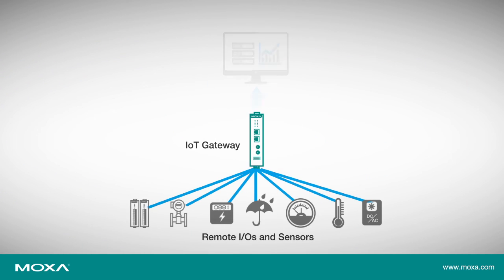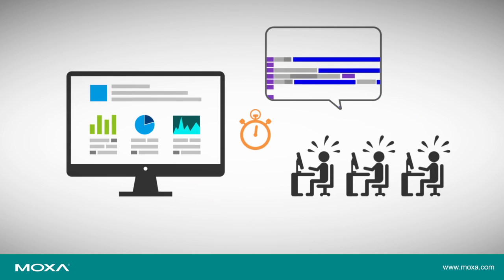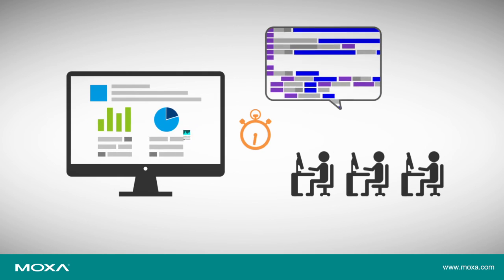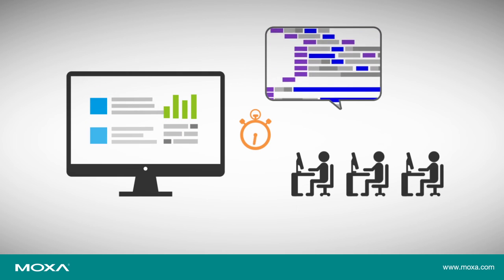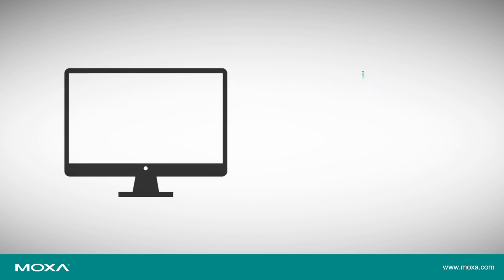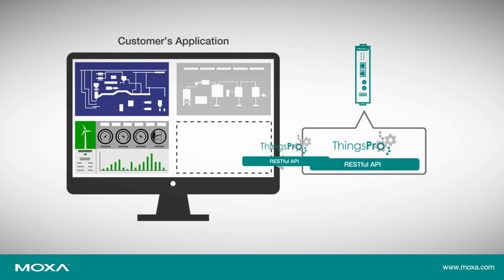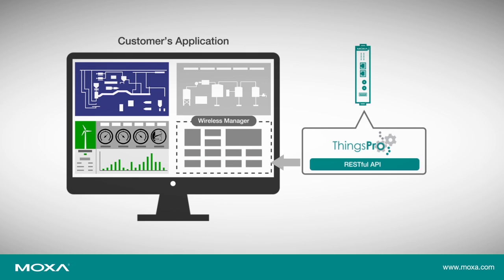The ability to add context to data collected from field devices and display this data on dashboards to cater to different business needs is a common requirement in today's applications. ThingsPro supports RESTful APIs that provide access to the IIoT gateway configuration, which makes it easy to integrate the gateway data into other applications, including dashboards.